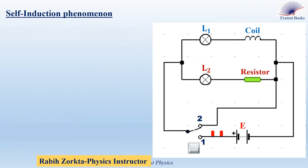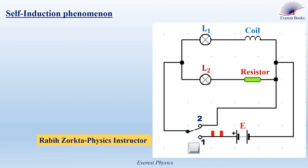Self-induction phenomenon. To understand this phenomenon, let's watch the shown experimental animation and then interpret the observation. This circuit includes an ideal battery, an SPDT switch — which has one input terminal and two output terminals — two identical lamps L1 and L2, a resistor, and a coil. L1 and the coil are connected in series, whereas L2 and the resistor are connected in series.